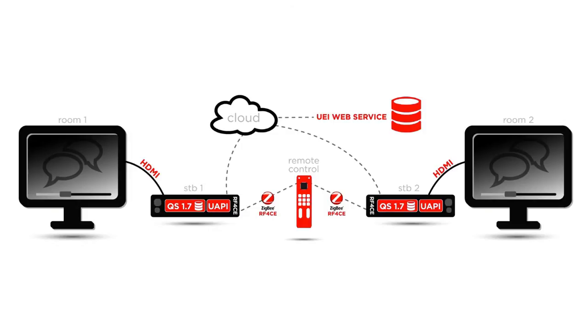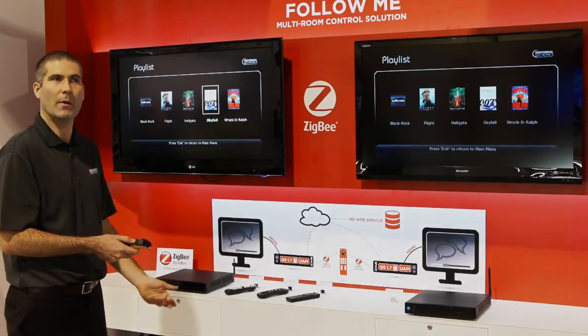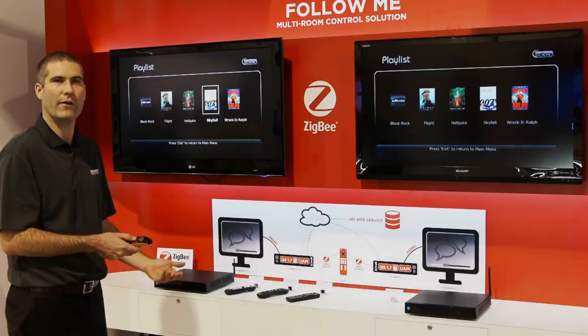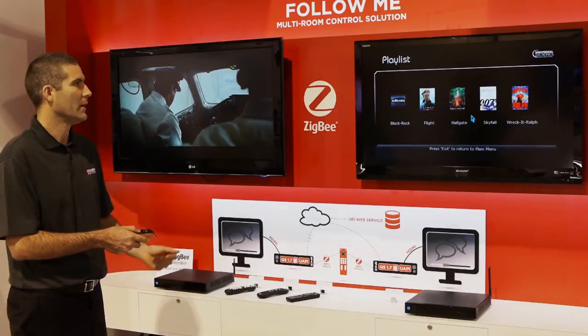UAPI is a set of extensions on top of RF4CE. It's ZRC compliant, fully complying with the standards set by the Zigbee Alliance — of which we are a member — and it enables a whole range of extra capability beyond what RF4CE would standardly provide. What I'm showing at this station is the Follow Me feature, which is enabled by storing state on the remote control.